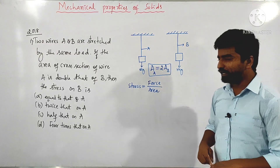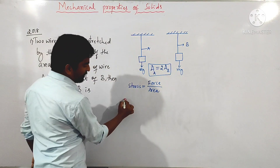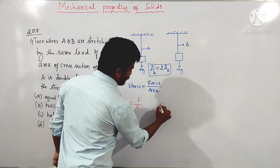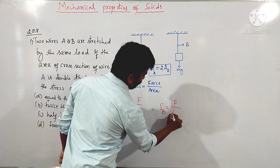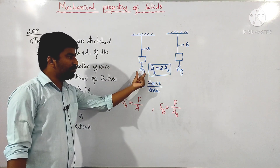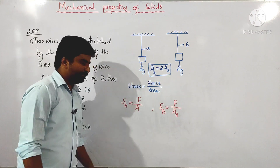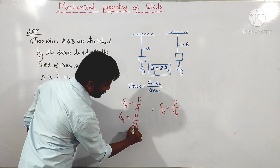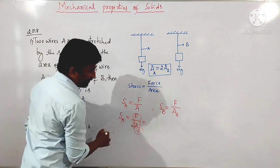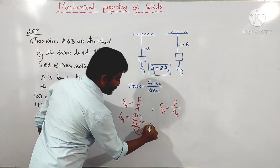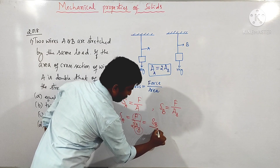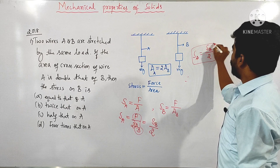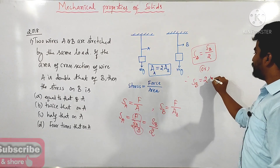We know that stress is force divided by area. Stress on wire A equals force divided by the area of cross section of wire A, which is two times the area of wire B. Stress on wire B equals force divided by the area of wire B. Since the same load is applied, the force is the same for both. So stress on wire A equals F divided by two times area of B, which equals (F divided by area of B) divided by 2 — that is stress on wire B divided by 2. Therefore, stress on wire B equals 2 times the stress on wire A.